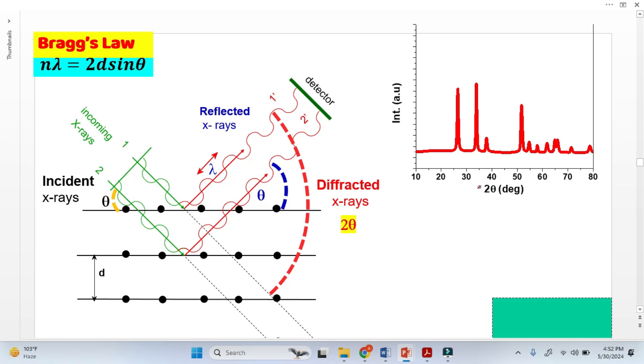In XRD analysis, this two-theta is very confusing. Sometimes people call it reflected angle, sometimes scattering angle, and sometimes deflected angle. In this video, I am going to clarify the differences among these confusing words.